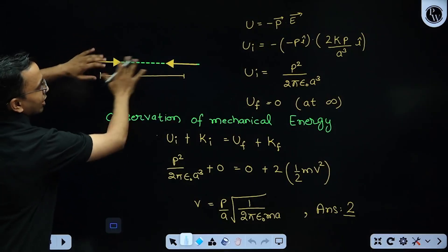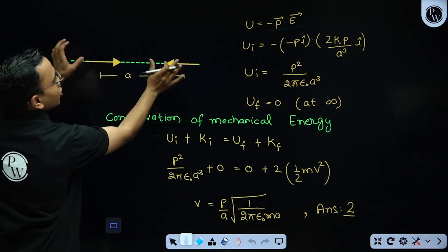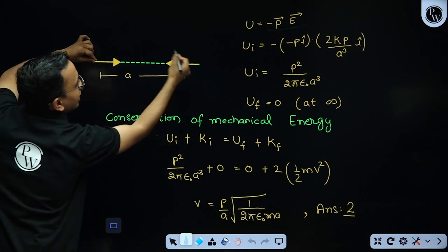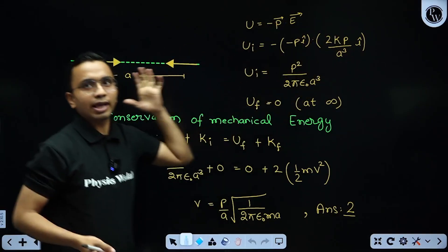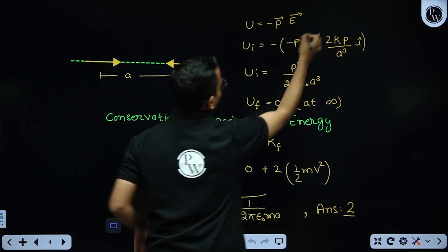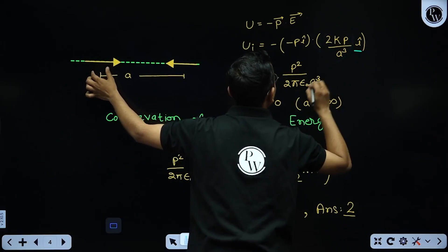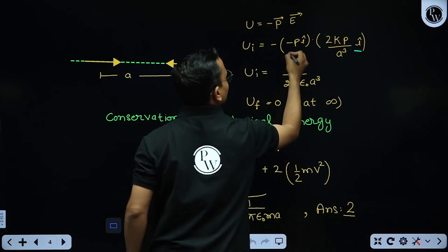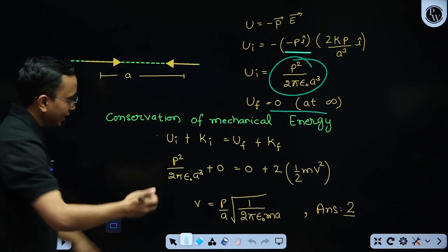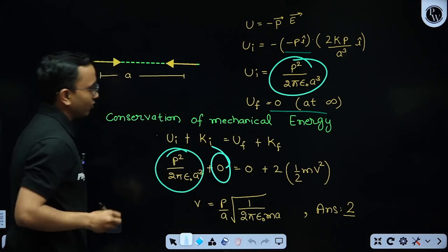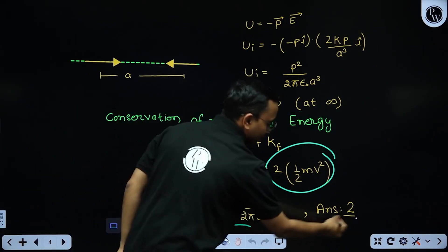This was the initial condition; at the final condition they are at infinity. The potential energy of a dipole is written as minus P dot E. For the initial potential energy, I take the electric field due to one dipole at the other — that is 2kp/a³ î — and take the dot product with minus P î for the other dipole's moment. Initial potential energy is obtained; final potential energy is 0 at infinity. Initial kinetic energy was also 0 (at rest). From conservation of energy, I got the final velocity. The answer is option 2.